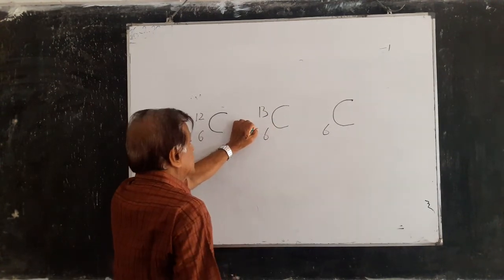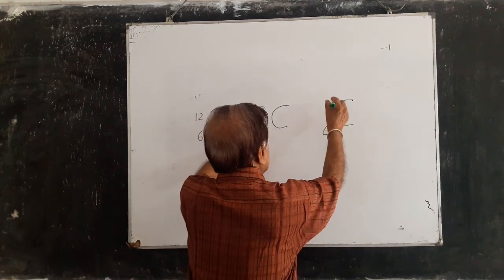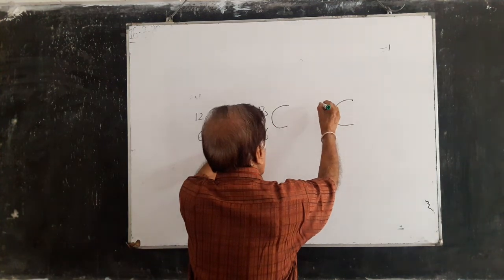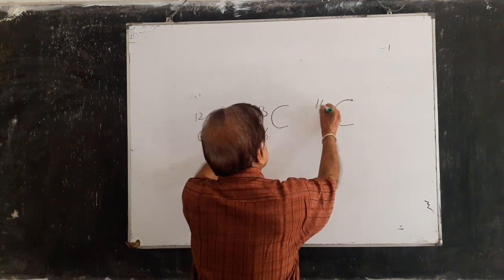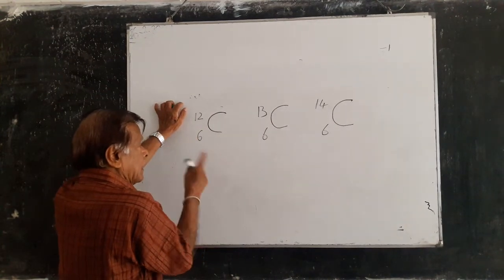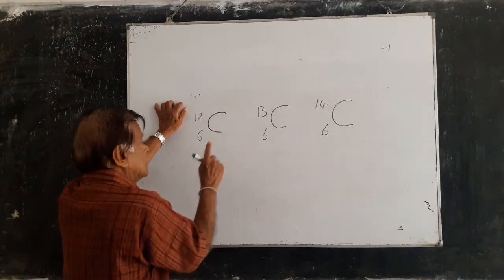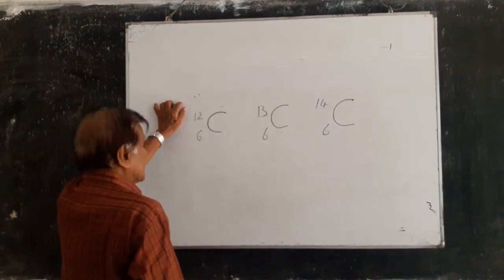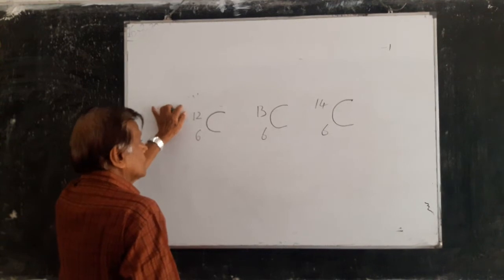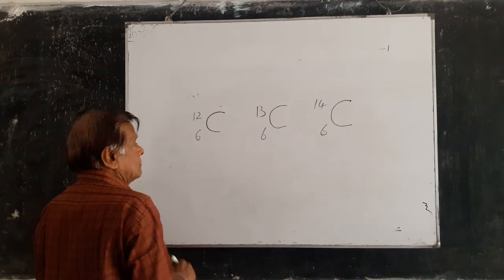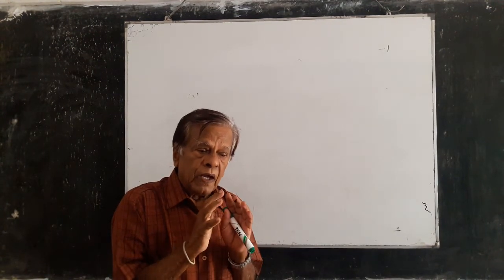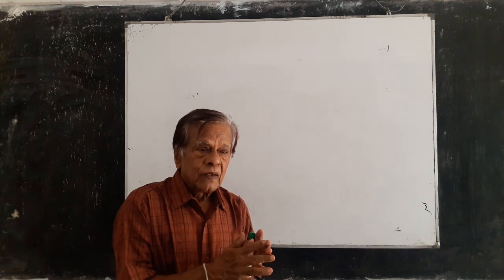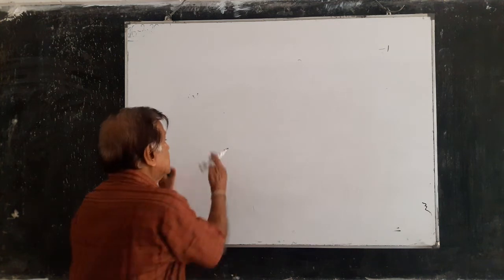In the third carbon isotope there are six protons and eight neutrons, giving fourteen nucleons and a mass number of fourteen — C-14. So the different types of carbon atoms are C-12, C-13, and C-14. The main isotope is C-12, which has six protons and six neutrons.